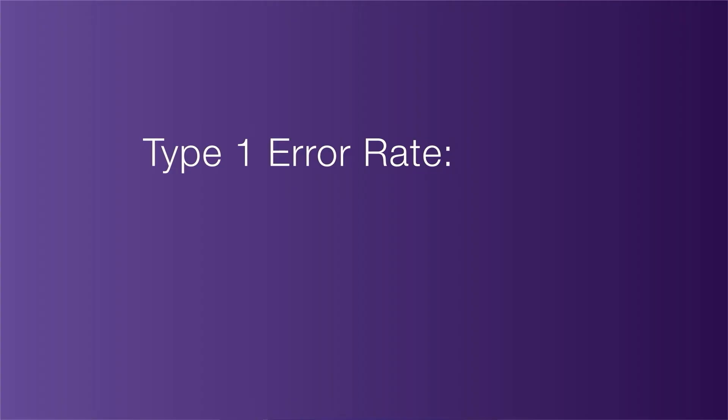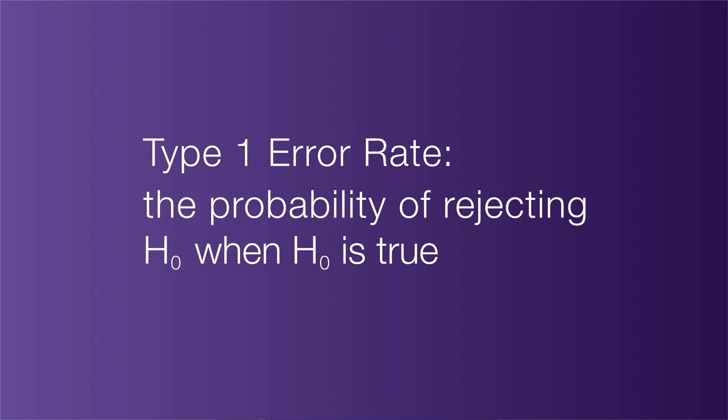The choice you make can have a meaningful impact on the p-value, and it all has to do with the type 1 error rate. The type 1 error rate is the probability of rejecting the null hypothesis when the null hypothesis is true. How you set the type 1 error rate determines how much evidence you need to reject the null hypothesis in favor of the alternative.